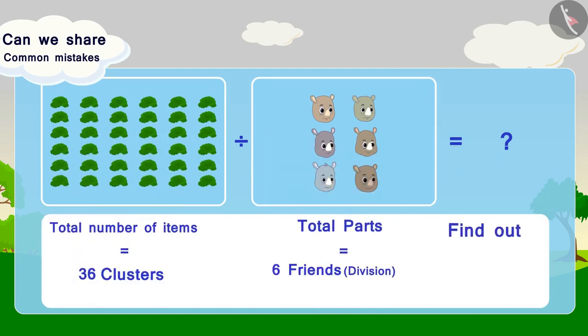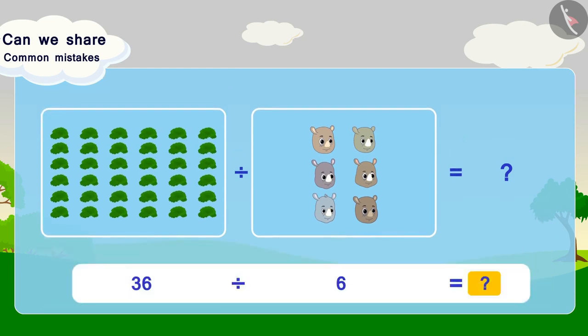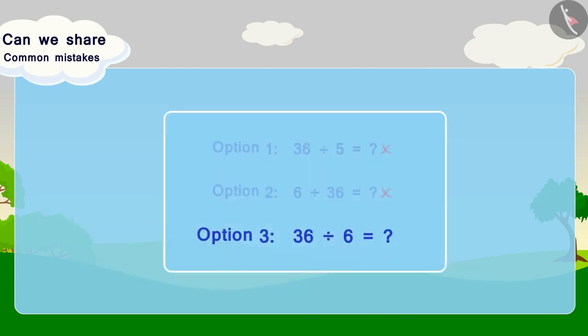In this option, we have divided 36 clusters into 6 friends. Thus, it is the right option.